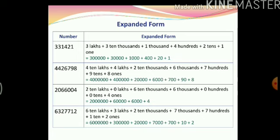I would like to point out one thing here. Notice how we have written 3 ten thousands and 4 hundreds but only 1 thousand because the number is only 1. If it was 3 instead of 1, then we would write thousands.